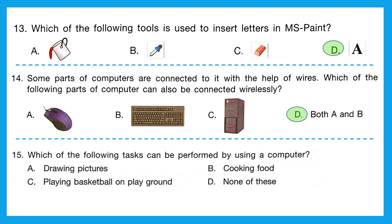Question 15: which of the following tasks can be performed using a computer? Option A is drawing pictures — yes, we can draw on a computer. Option B is cooking food — no. Option C is playing basketball on a playground — no. Option D is none of these, which is also incorrect since drawing pictures can be done. Our correct option is A, drawing pictures.